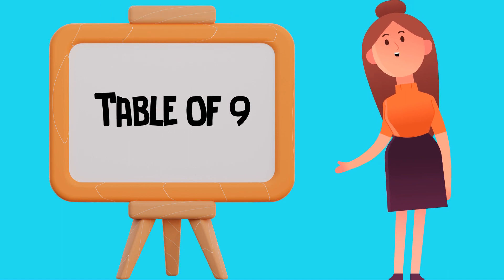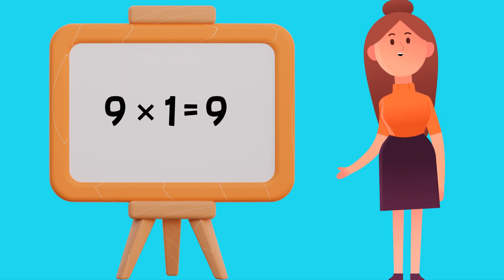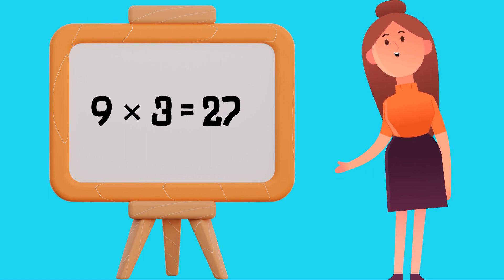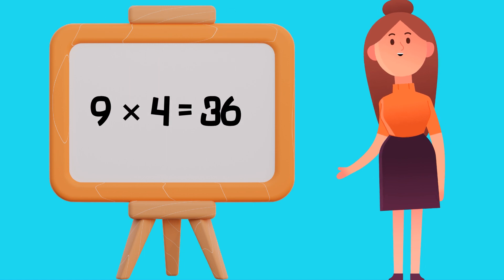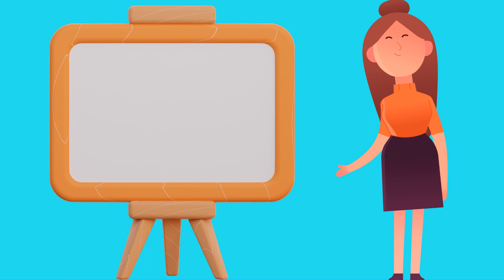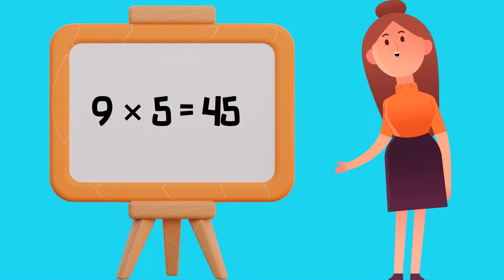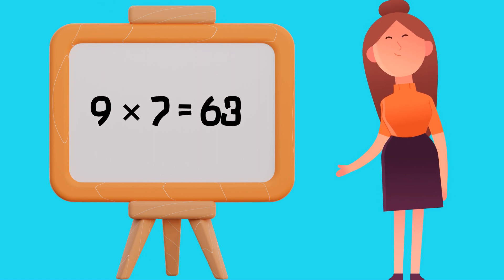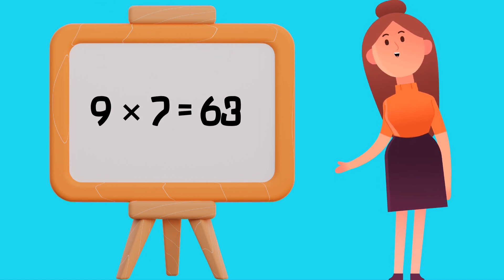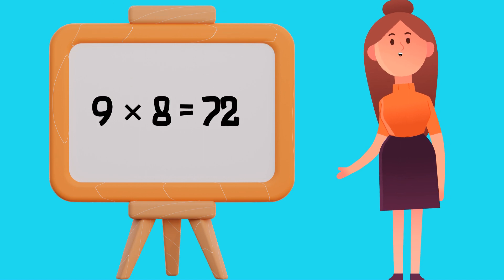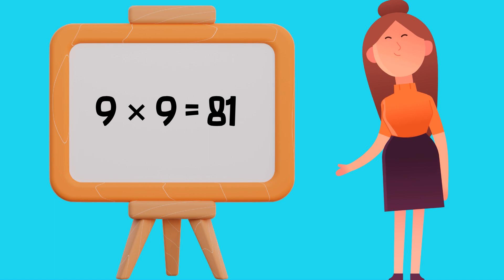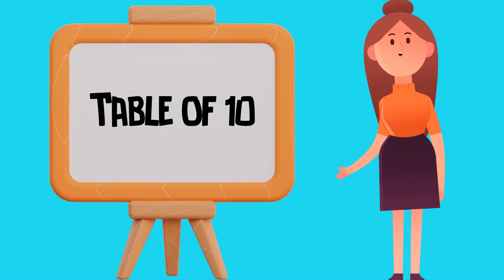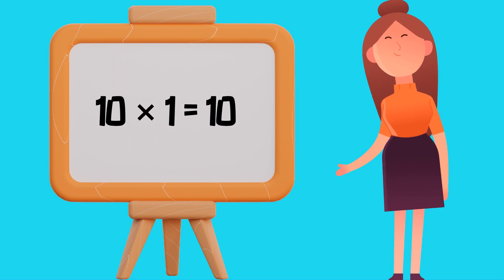Table of 9: 9 1's are 9, 9 2's are 18, 9 3's are 27, 9 4's are 36, 9 5's are 45, 9 6's are 54, 9 7's are 63, 9 8's are 72, 9 9's are 81, 9 10's are 90.